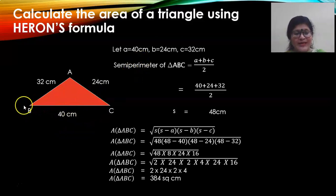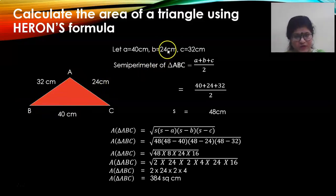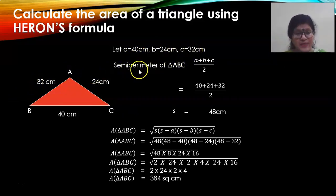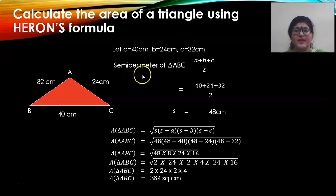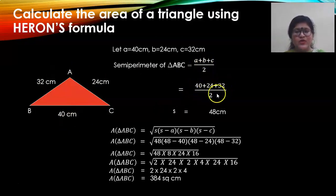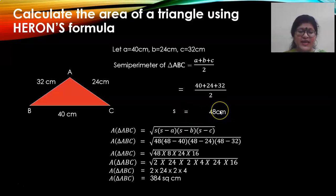The side opposite to angle B, that is AC, is small b — so b equals 24 cm. And the side opposite to angle C is AB which is 32 cm. Then you find out the semi-perimeter of triangle ABC. Semi-perimeter means half the perimeter. Perimeter is A plus B plus C — the sum of the three sides. You add them: 40 plus 24 plus 32, divide by 2, and you get the semi-perimeter as 48 cm.